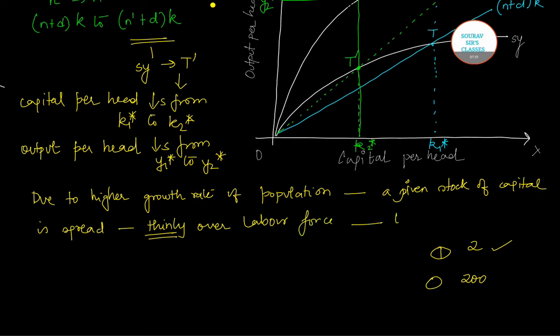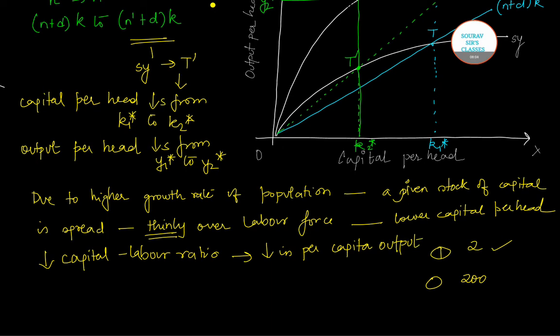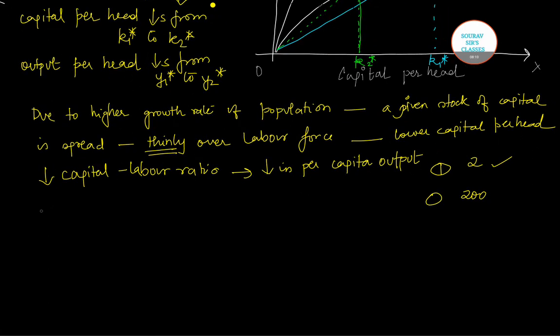And this actually results in lower capital per head. That means capital labor ratio falls. Now decrease in capital per head or capital labor ratio causes declining per capita output, which has been marked on the y-axis or the vertical axis.